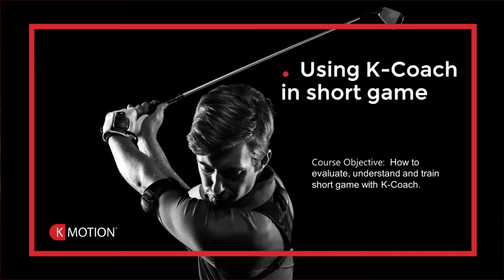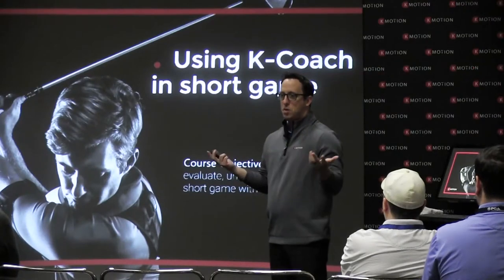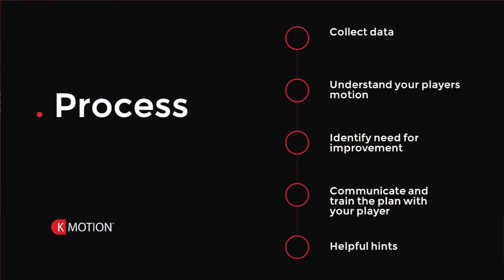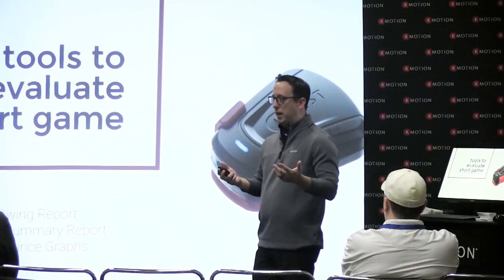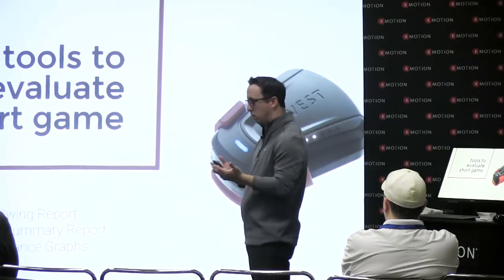Our course objective is how to evaluate, understand, and train short game with K-CODE. Just like full swing, we have all those capabilities with short game as well. We just need to understand some of the adaptations and differences in the motions. Our process is the same: collect your data, understand your player's motion, identify their need for improvement, communicate and train the plan, and we'll go through some helpful hints at the end. We have some different philosophies on short game and differences in the data.